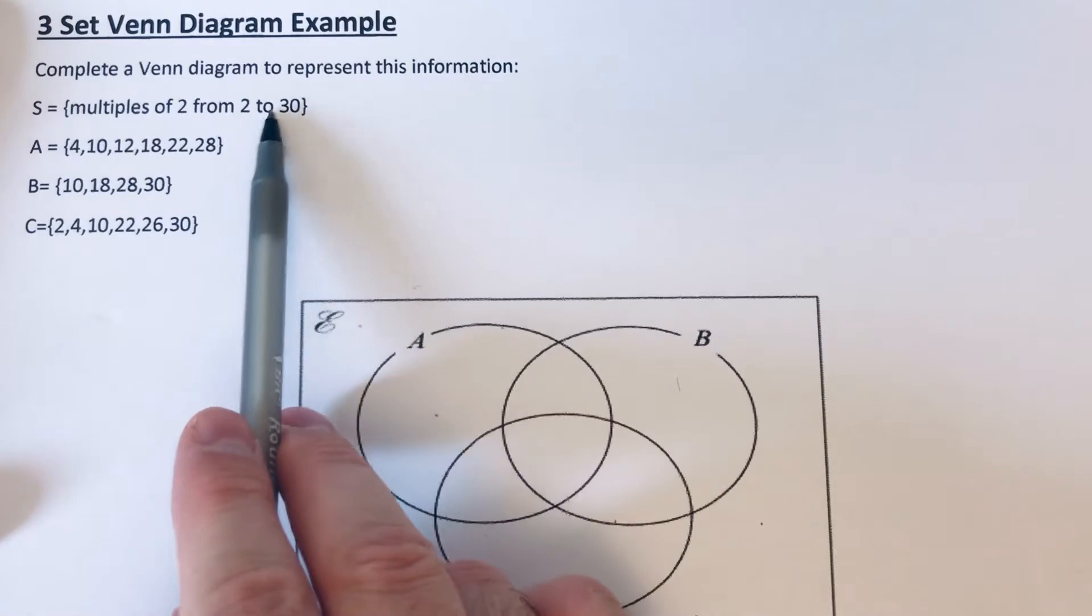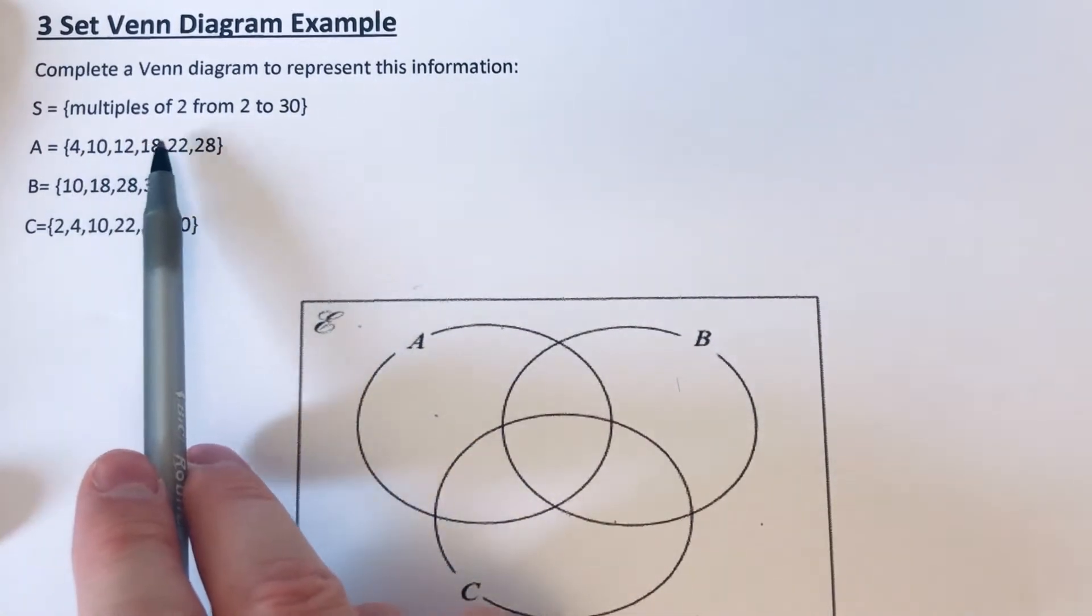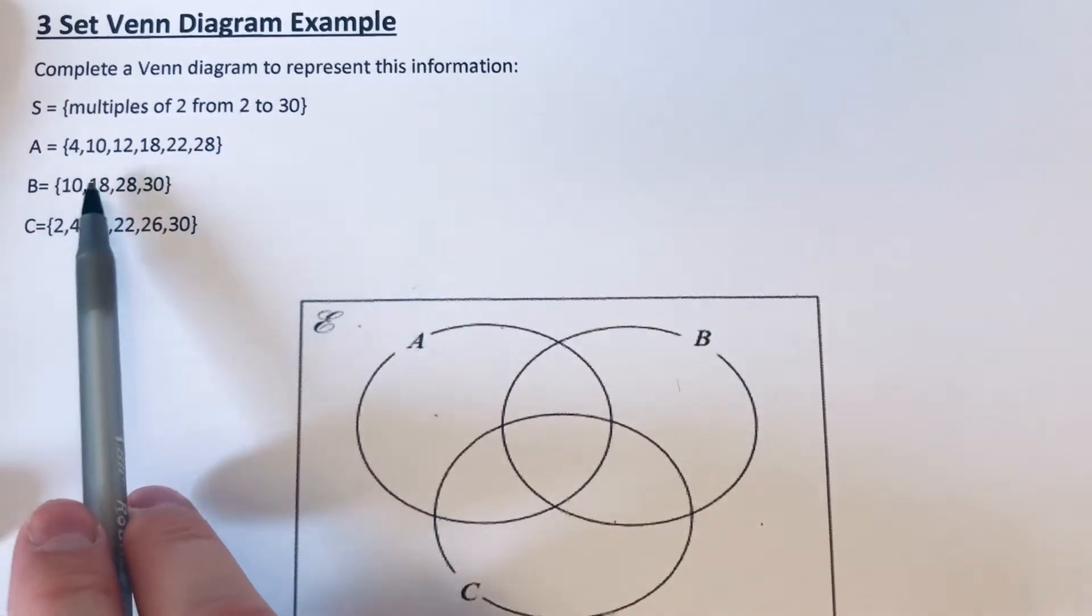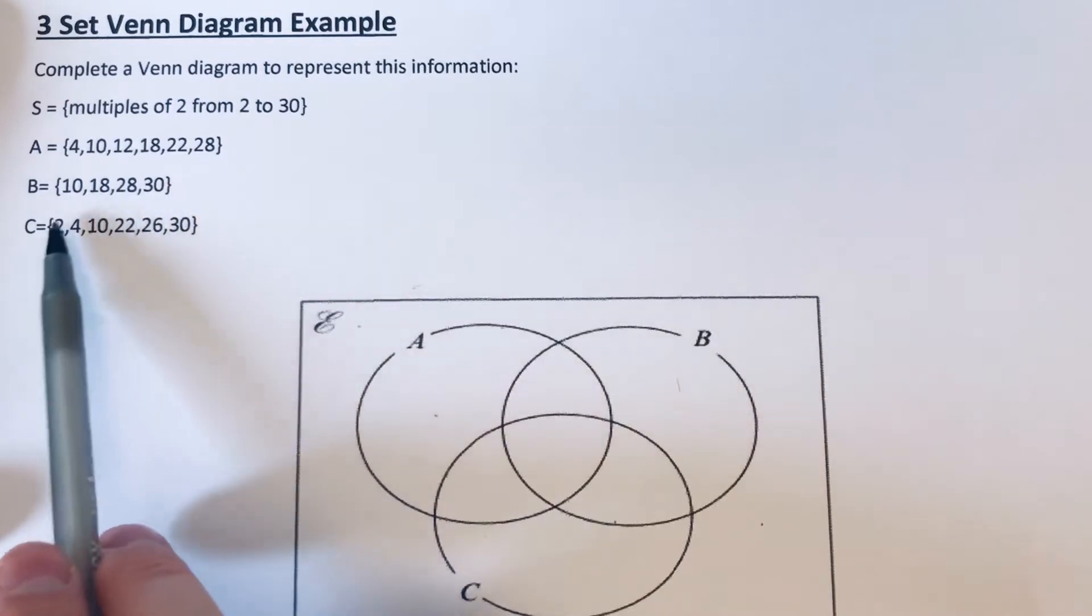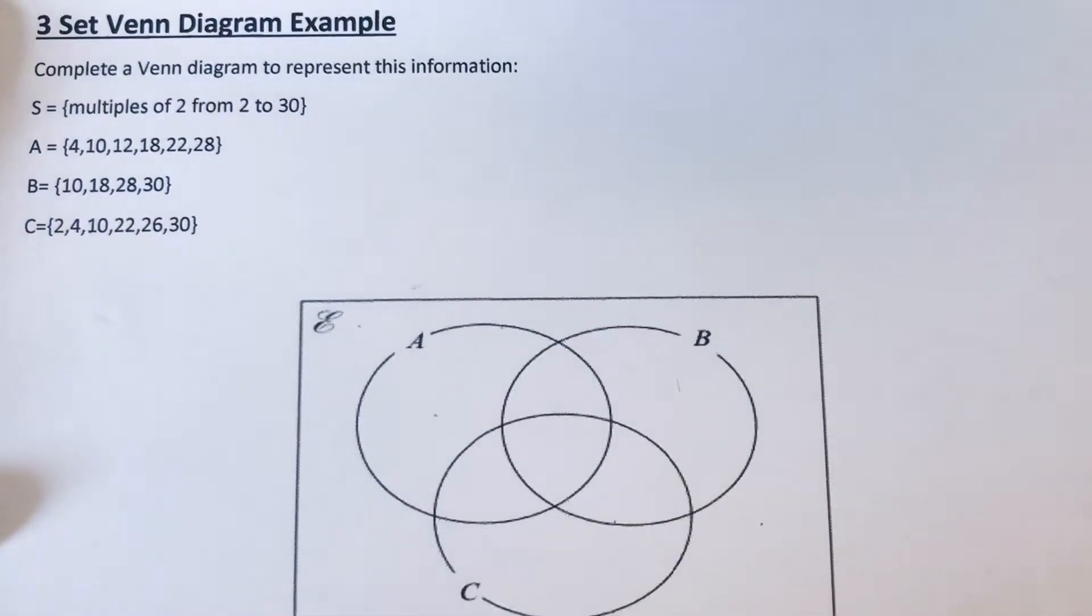We've got the numbers: A = {4, 10, 12, 18, 22, 28}, set B contains the numbers {10, 18, 28, 30}, and set C is {2, 4, 10, 22, 26, 30}. So let's start off with our universal set.